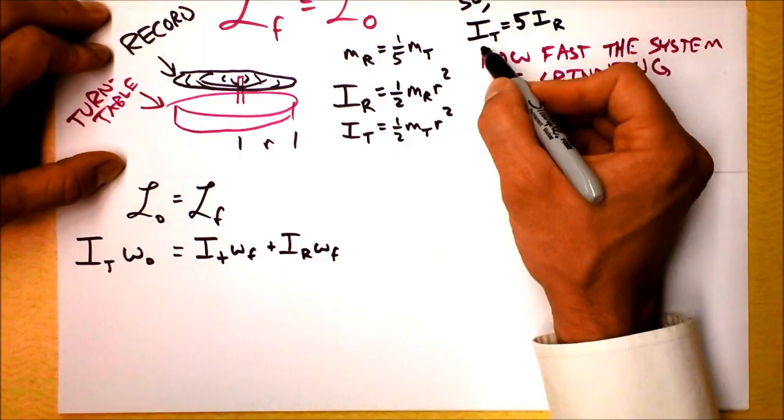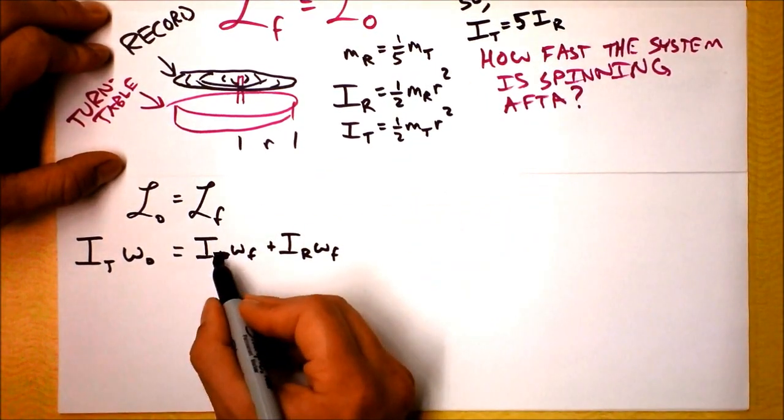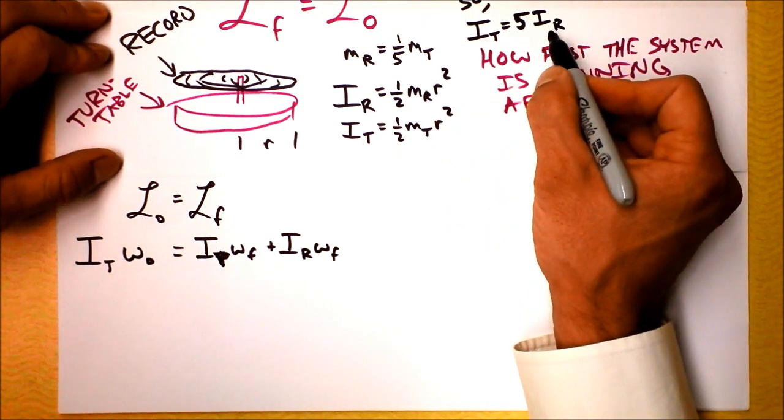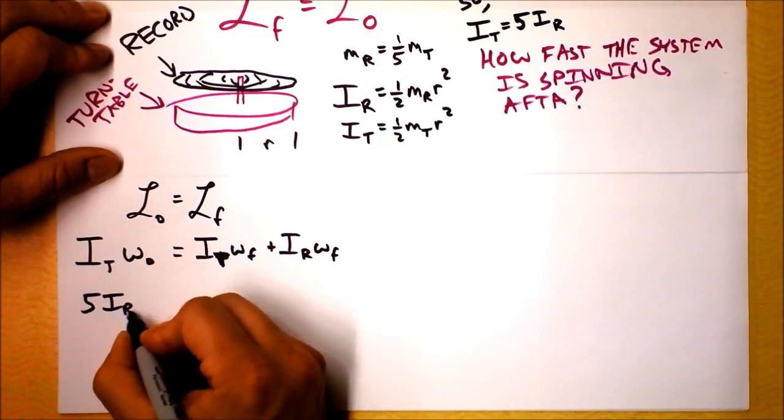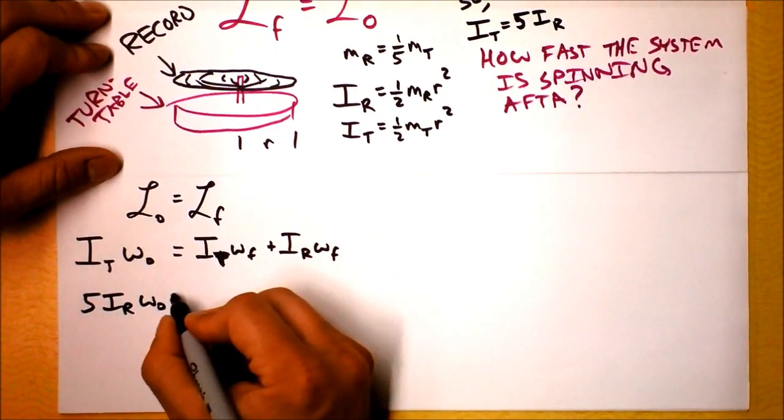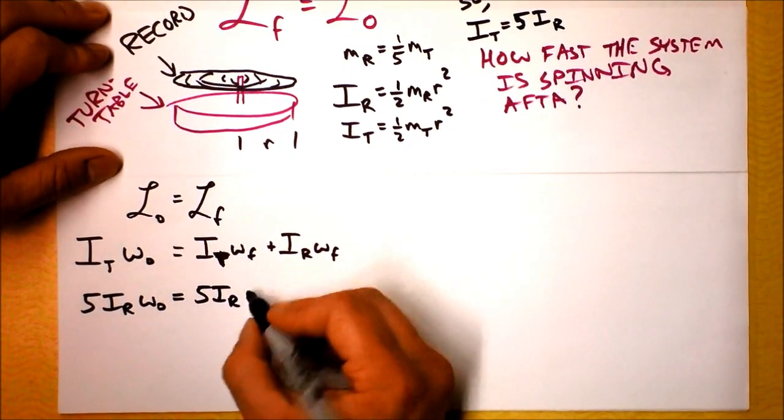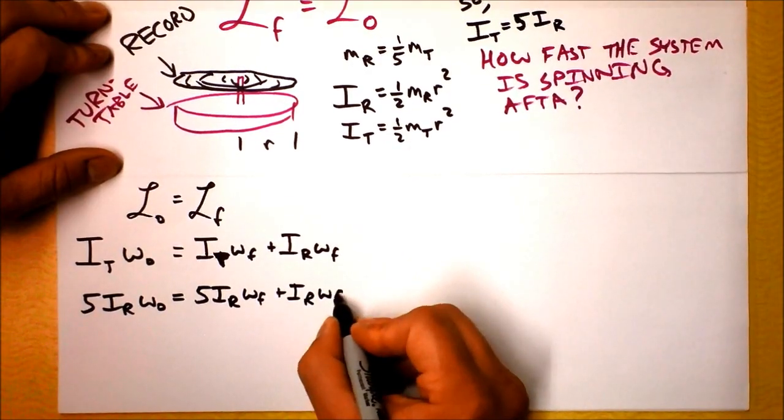We know the moment of inertia of the turntable. Sorry, can I stick with a capital T? Holy cow, sorry, I'm being so confusing. I'm going to stick with a capital T, and that's five times the moment of inertia of the record. So I'm going to write 5I record times omega naught is 5I record times omega final, plus I record times omega final.